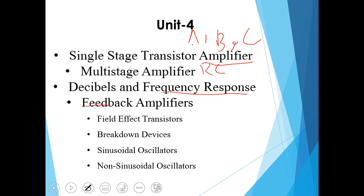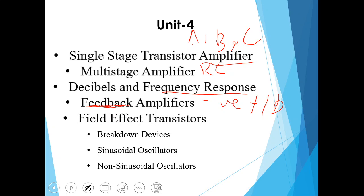Next one is feedback amplifier where we'll study positive feedback, negative feedback, principle of feedback, advantages of negative feedback, forms of negative feedback. Next chapter is FET, that is field effect transistor, where we'll study about JFET, its characteristics, DC load line, advantages of FET, MOSFET, and its characteristics.